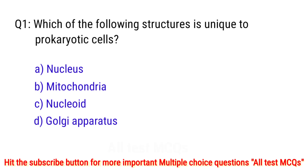Question number 1. Which of the following structures is unique to prokaryotic cells? The right answer is option C: nucleoid.